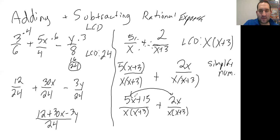2x and 5x go together, so that's going to make 7x + 15 over x(x+3), and that would be your final answer.